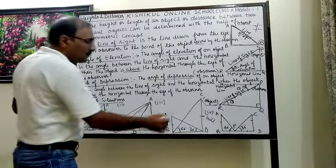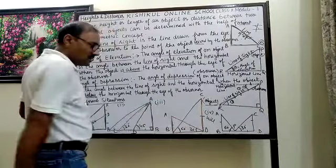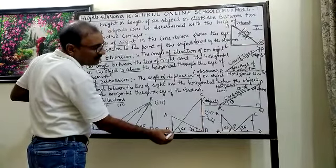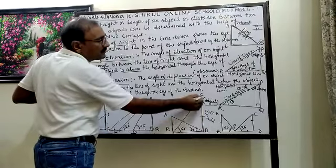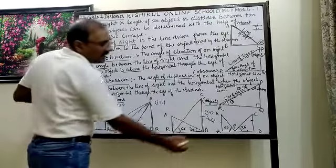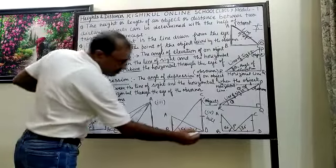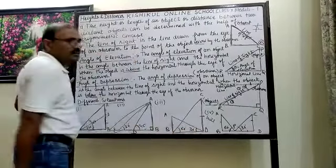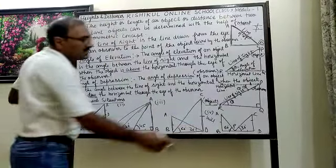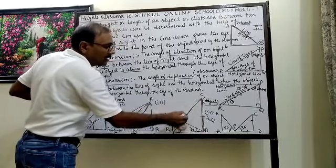Now in situation 3: AB is a building and CB is a hill. At the foot of the building, we observe the top of the hill — the angle of elevation is 60 degrees. When we observe from the foot of the hill to the top of the building, the angle of elevation is 30 degrees. So the taller structure always has a bigger angle of elevation.